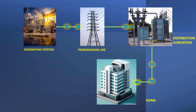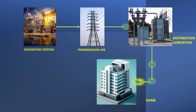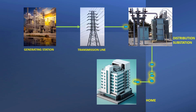Electricity is generated at a generating station. There are different types of generating stations in the world — it may be a hydroelectric generating station, thermal power plant, nuclear power plant, etc. From the generating station, it is transferred to the distribution substation using transmission lines.